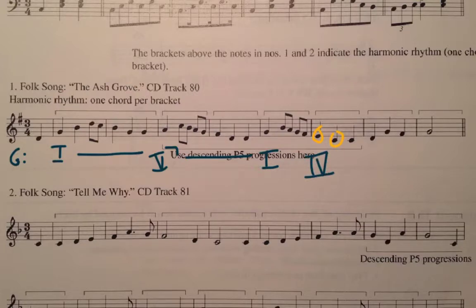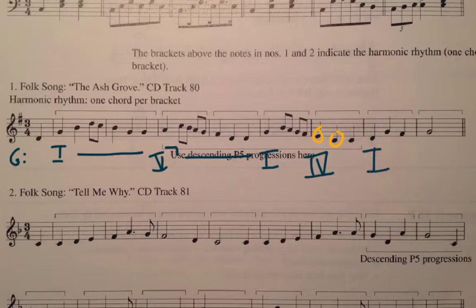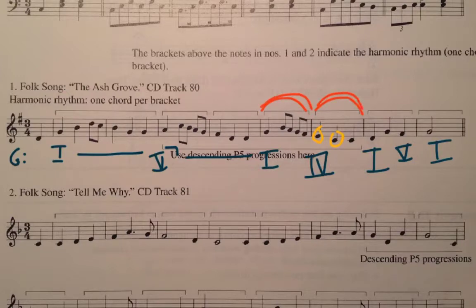Then we get to the second-to-last measure. Often, when you get near the end of a song, the harmonic rhythm can accelerate — in other words, we can change faster than every measure. Here, since we have a D and a G, which are part of the tonic chord, I'll use the tonic. But when we get to the F-sharp, we'll call that part of the dominant, and the last measure is tonic. Notice the acceleration: we've been changing every measure, but now we have part of a measure of tonic and part of a measure of dominant before the cadence.